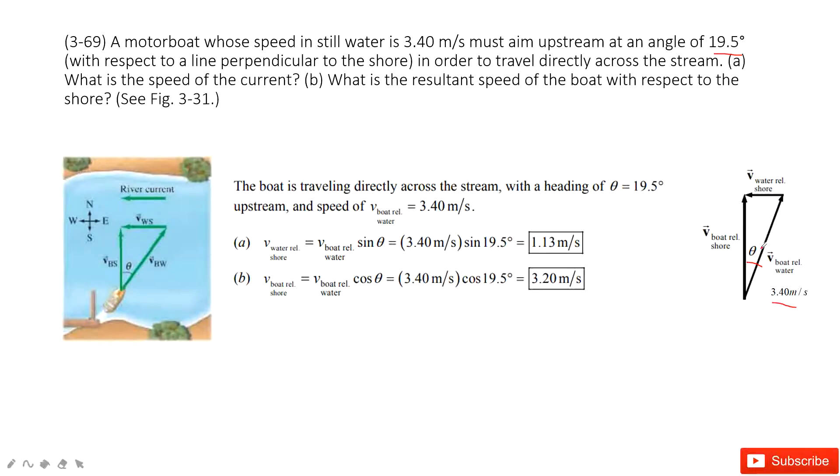And then in this case we can see this is still the relative velocity. The velocity boat to the shore must equal to velocity boat to the water plus the velocity water to the shore. Do you agree?